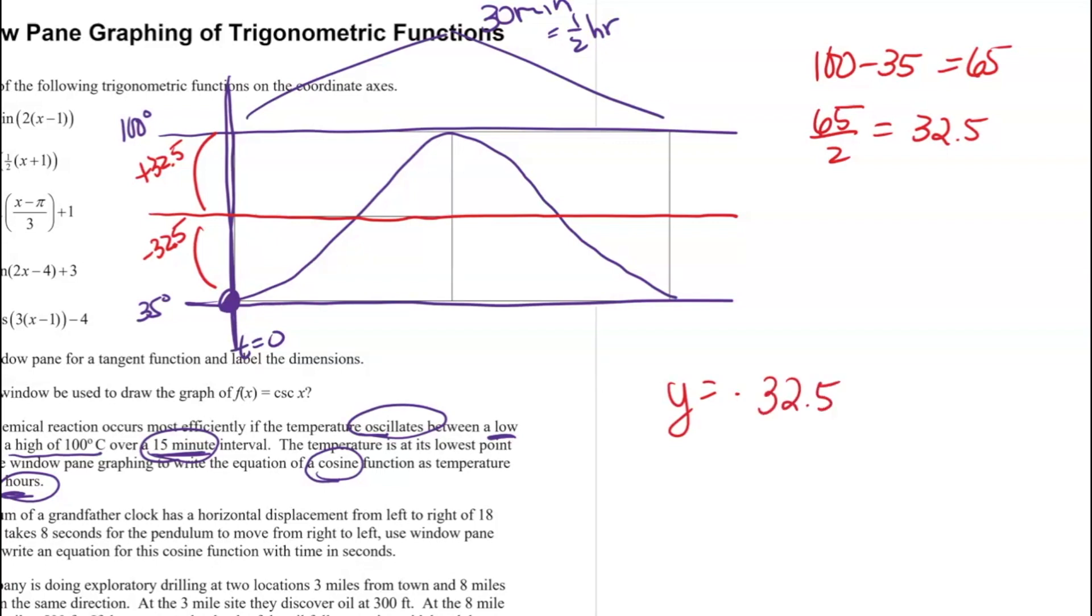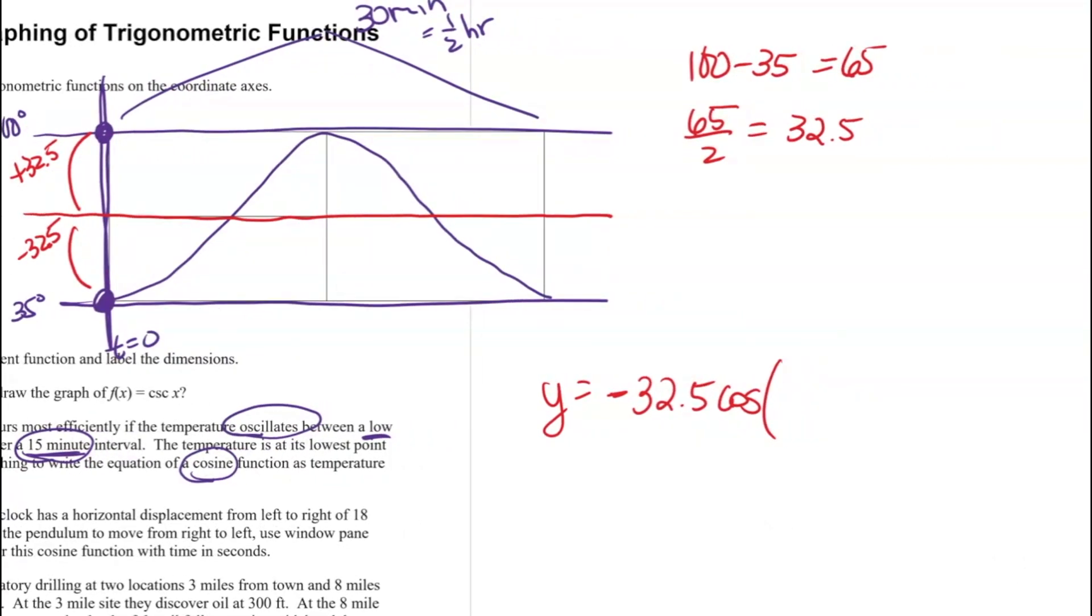I also know my a is going to be negative, and that's because we know that cosine normally starts up at the positive value, but this one is starting down at the bottom. So it's negative. Then I have the cosine of, and inside there I'm going to need to know my frequency. I notice that my period is one half an hour—it takes me a full half an hour to go from a low to a high back down to a low. So my period, which is normally 2π over b, is equal to one half of an hour. If you do a little algebra there, you get that b is 4π.